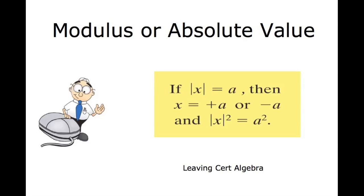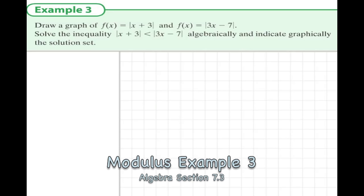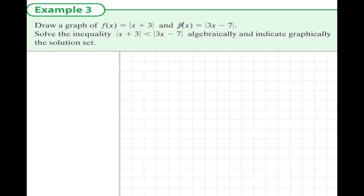Here we have Example 3 on modular inequalities from the Leaving Cert Higher Level course. In this example, we're asked to draw a graph where f(x) = |x + 3| and f(x) = |3x - 7|. Now I think there's a mistake in the question - we shouldn't have f(x) meaning two different things, so I'm going to call the second function g(x).